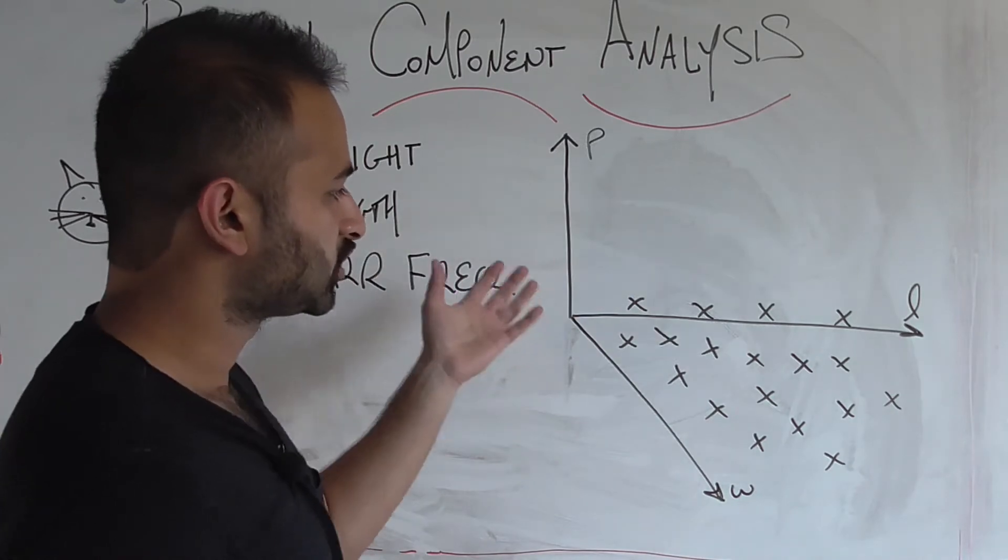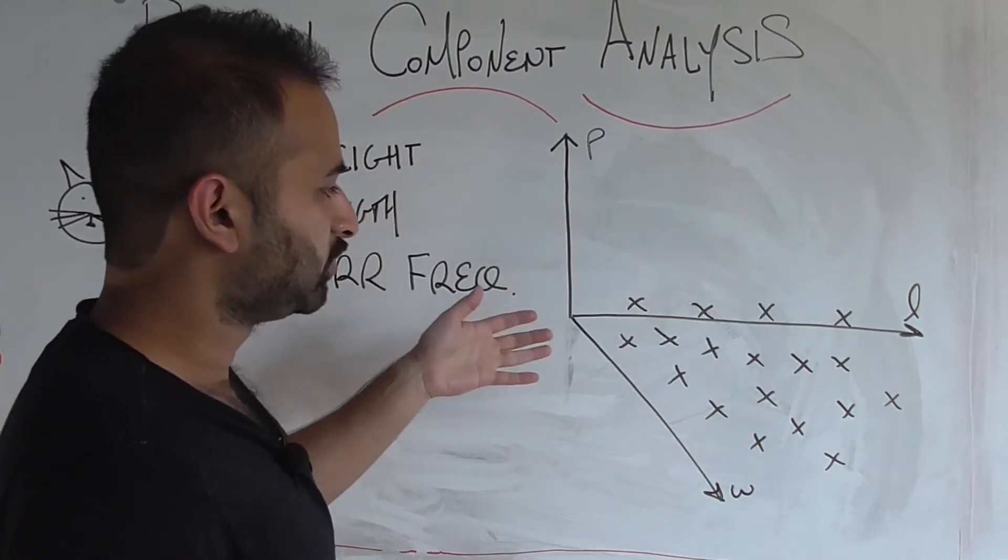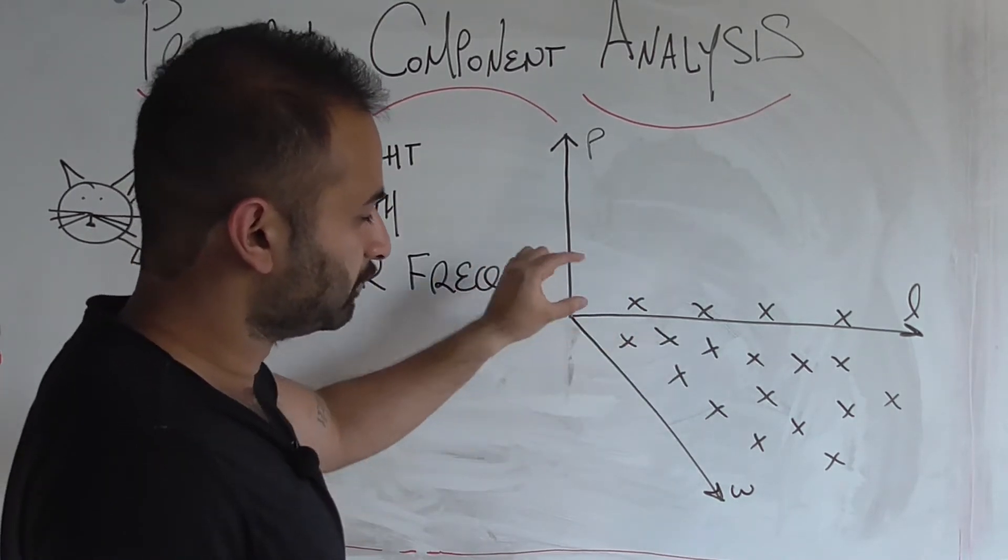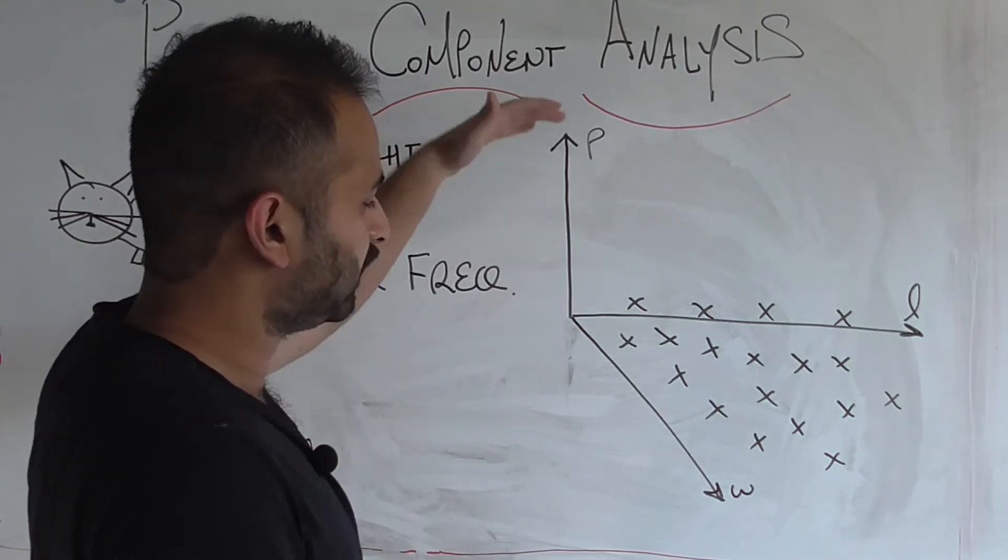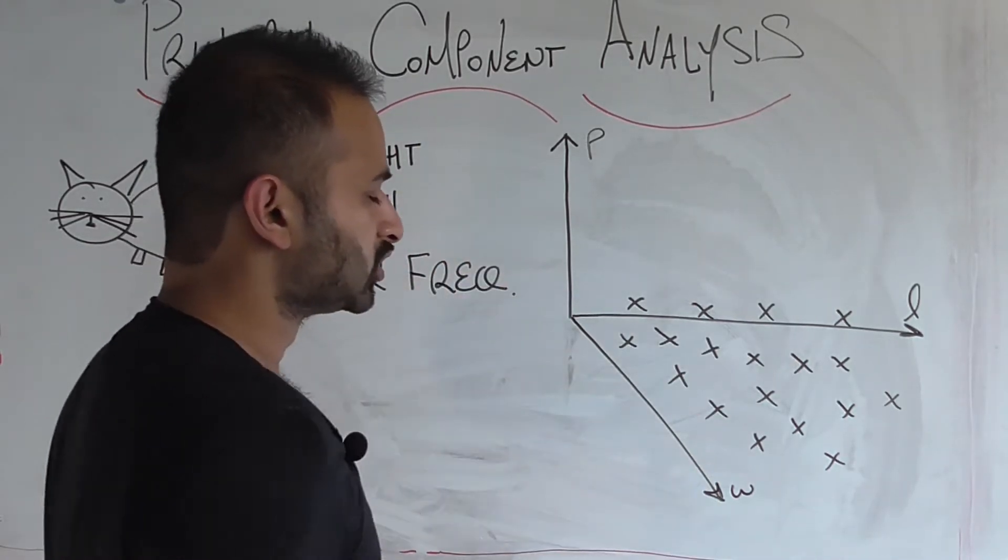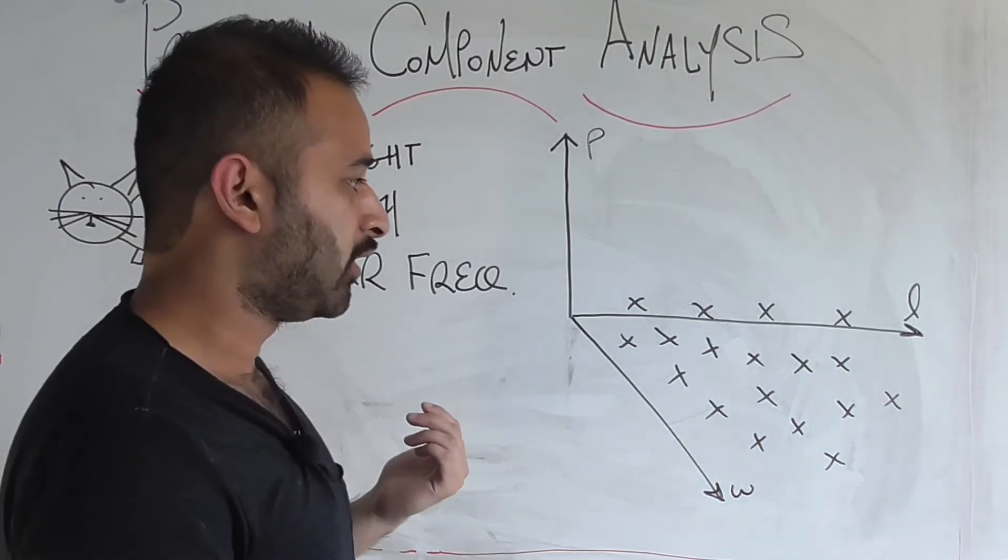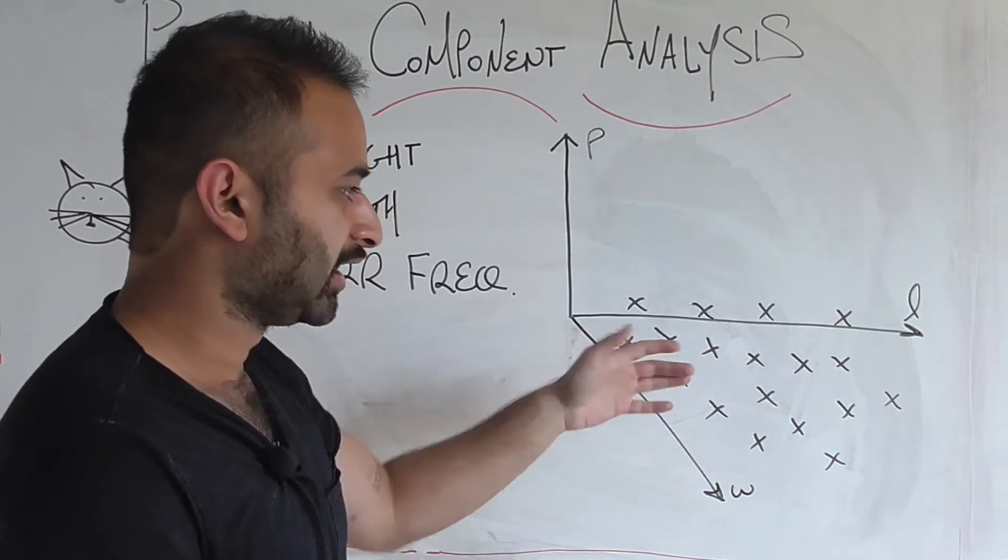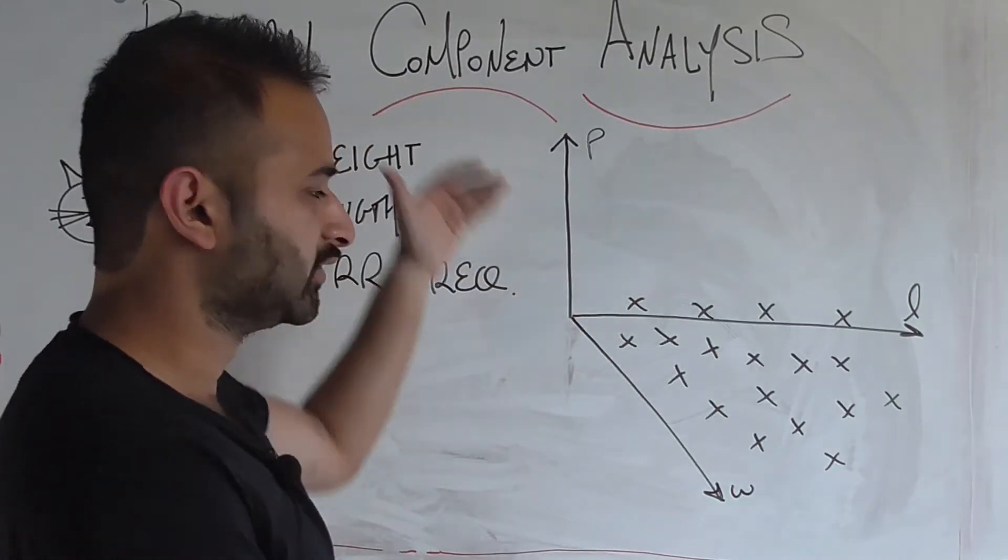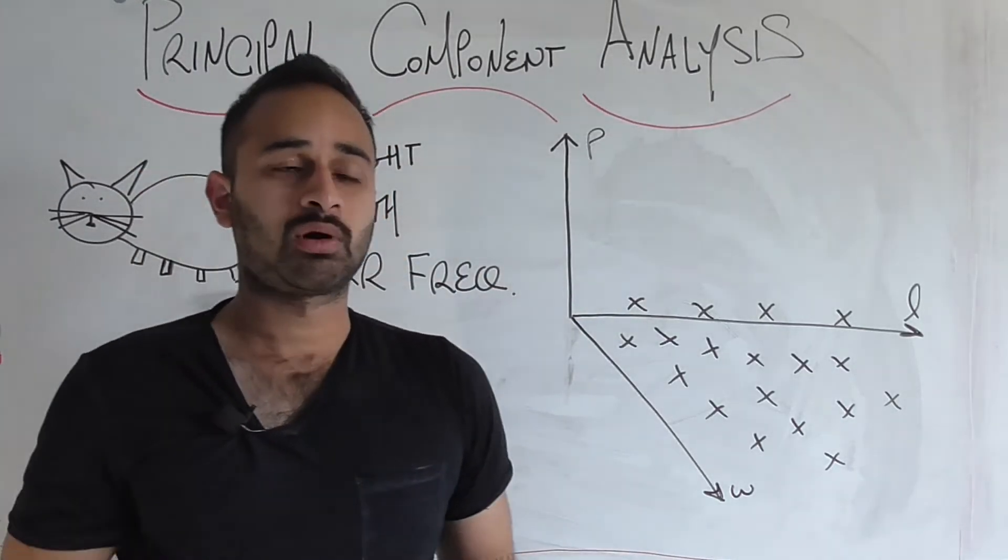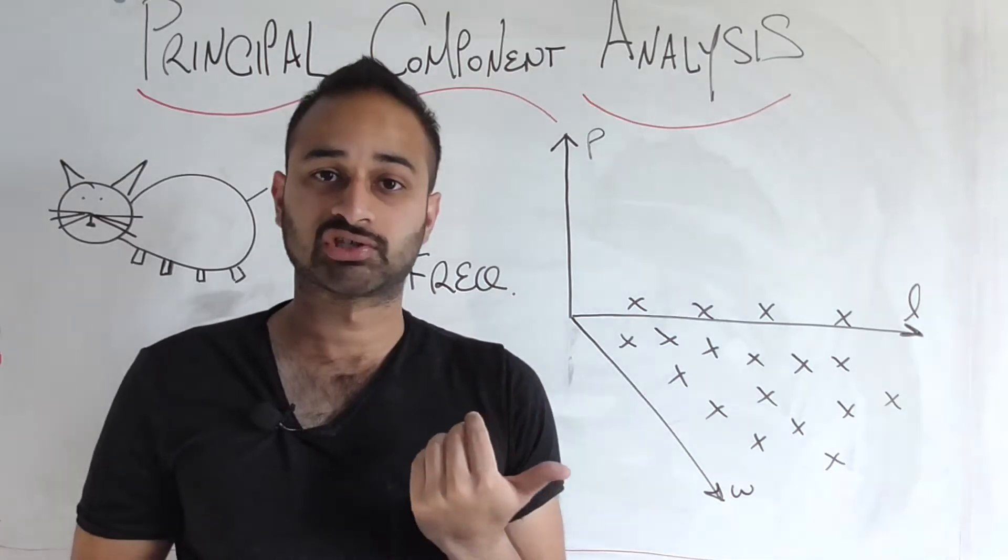You'll notice on this chart that purr frequency ends up being usually zero or maybe a little bit positive but it's never very large compared to the magnitude of length and weight. So what that basically means geometrically is that all of our cats kind of fall on the xy or weight length plane. So there's not a lot going on in the z direction. And this is where one application of principal component analysis comes in.